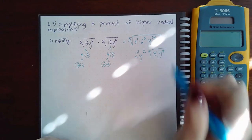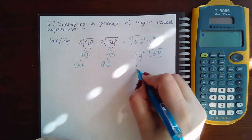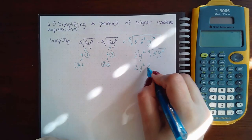So if I clean this up, it's just 2y² and then the fifth root of 3y⁴.